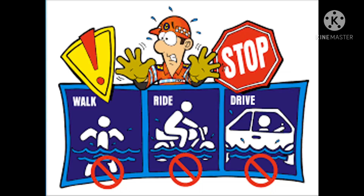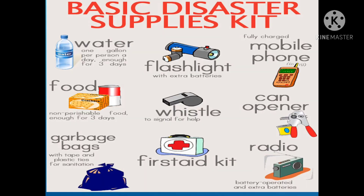Now that you know the dangers of the different weather disturbances, these are the things we should do and remember to get ready. These are the basic disaster supplies kit: water, food, garbage bag, flashlight, whistle, first aid kit, mobile phone, can opener, and radio.